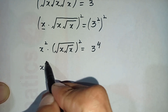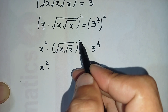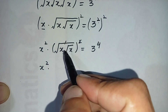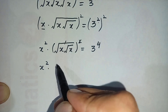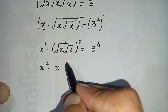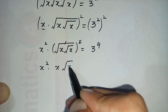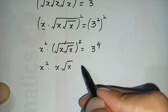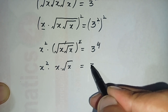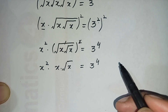We write the base the same and 2 times 2 gives 4. Simplifying the left-hand side, x squared remains, and the square and the square root cancel each other, leaving x times square root of x. The right-hand side becomes 3 raised to power 4.